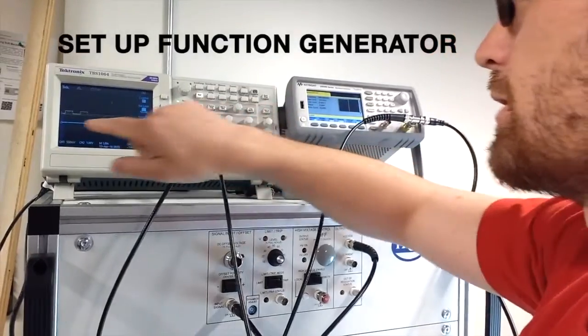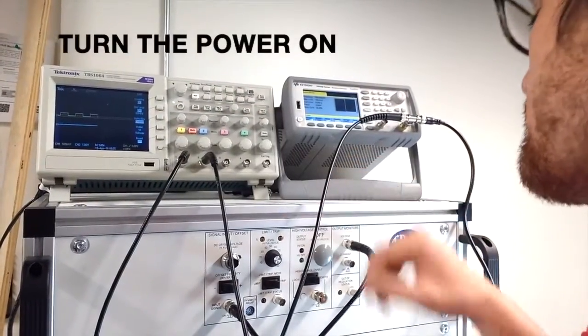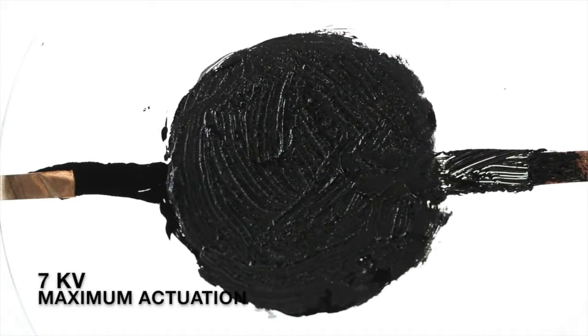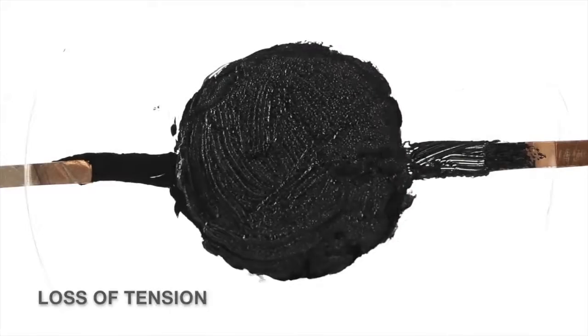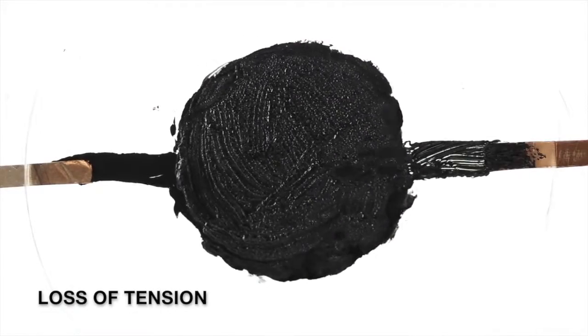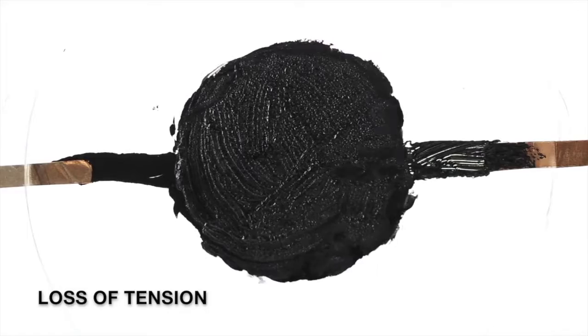Clip electrodes to your copper tape leads. Before turning on the amplifier, set up your function generator. When you're ready, turn the power on. At 7 kV, maximum aerial expansion achieved is 50%.